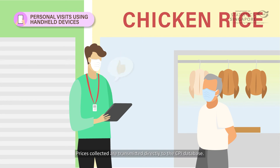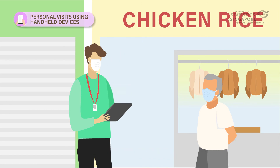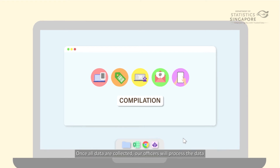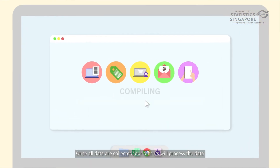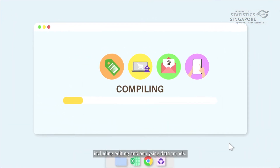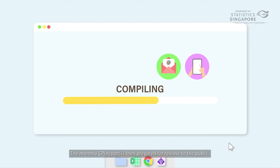Prices collected are transmitted directly to the CPI database. Once all data are collected, our officers will process the data including editing and analyzing data trends. The monthly CPI report is then prepared for release to the public.